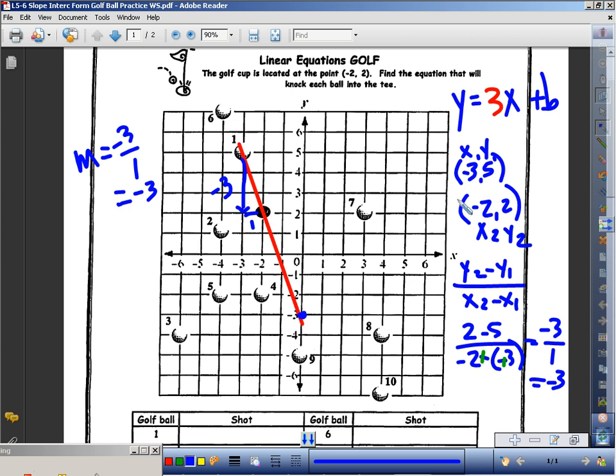I'm going to pick one of these points. I think I'll pick this point right here. I have an x and a y. I'm going to plug those in here. For my y, I'm going to plug in two. For my x, I'm going to plug in negative two, and I'm going to solve for b.